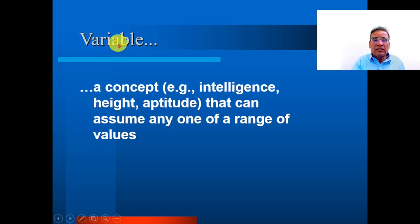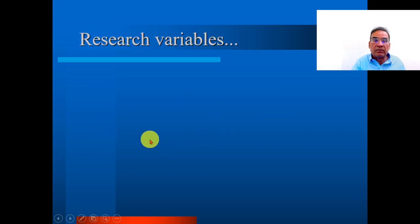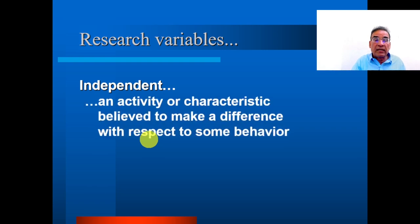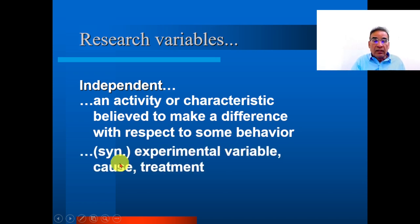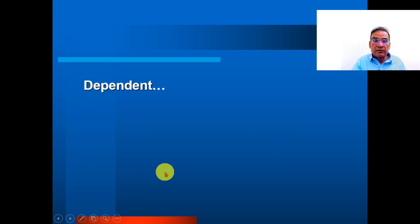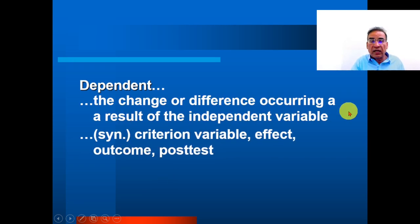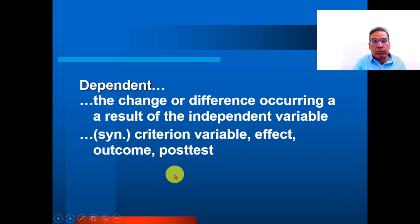What is a variable? A concept — for example, intelligence, height, aptitude — that can assume any one of a range of values. These are variables. There are two types of research variables: independent and dependent. An independent variable is an activity or characteristic believed to make a difference with respect to some behavior — it is also called the experimental variable, cause, or treatment. A dependent variable is the change or difference that occurs as a result of the independent variable — also called the criterion variable, effect, outcome, or post-test.